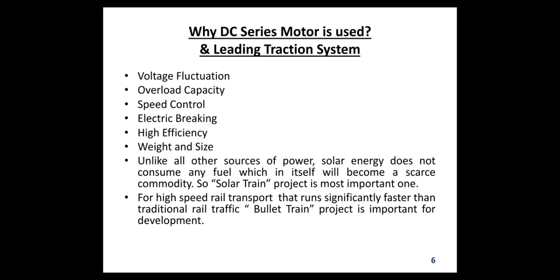Regarding the leading traction system, Indian Railways in collaboration with BHEL has set up a 1.7 megawatt solar power plant to be connected directly to the overhead traction system to run electric trains. This project is installed at Meena city in Madhya Pradesh, and another center for installation of a 1 gigawatt solar plant along railway tracks is also planned. Unlike other sources of power, solar energy does not consume any fuel, which will become a scarce commodity. The bullet train project is also important for high-speed rail transport that runs significantly faster than traditional traffic.